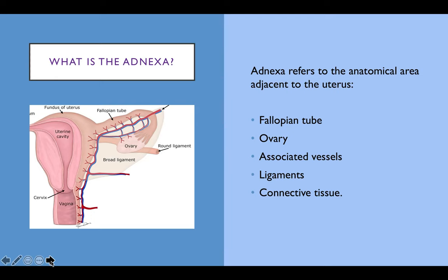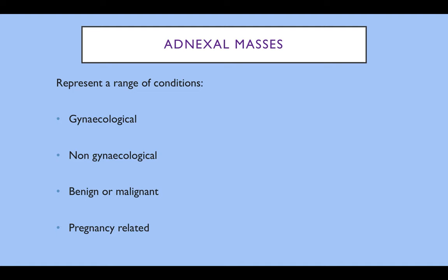The adnexa refers to the anatomical area adjacent to the uterus consisting of the fallopian tube and the ovary, the associated vessels, ligaments, the broad ligament and the round ligament that support the uterus and connected tissue around it. Adnexal masses represent a range of conditions both gynaecological and non-gynaecological, benign or malignant, and of course they can also be related to the pregnancy itself.